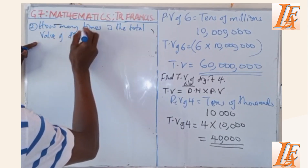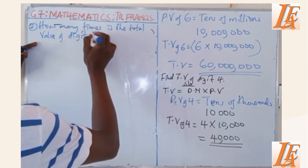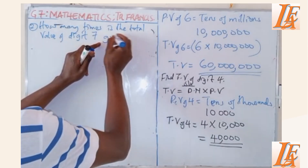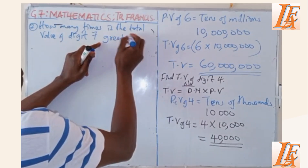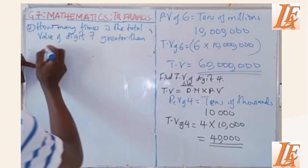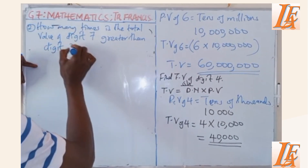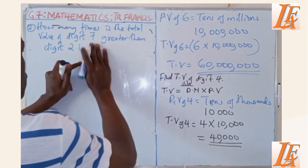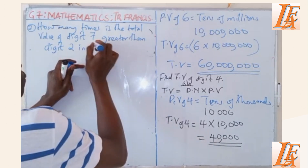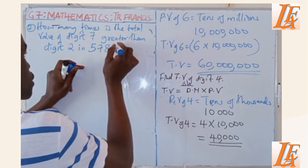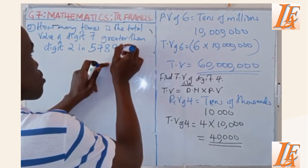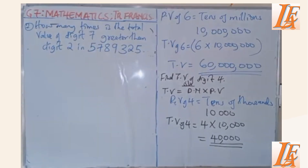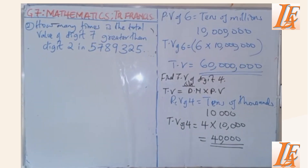How many times is the total value of digit 7 greater than digit 2? In the number 5,789,325. So you are asked how many times is the total value of digit 7 greater than digit 2?